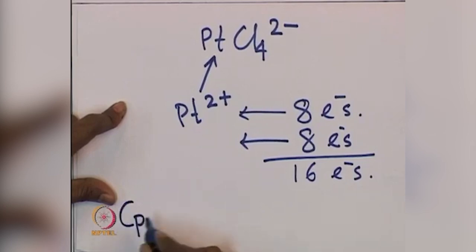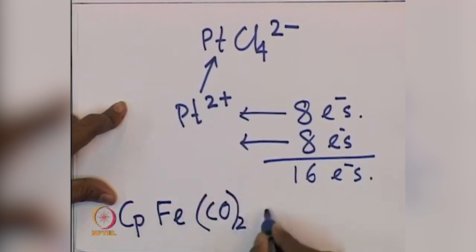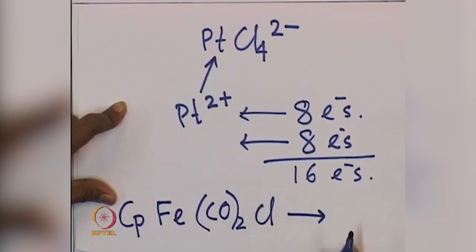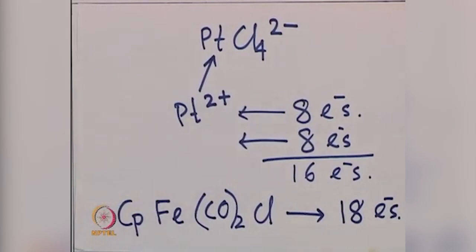Similarly, you can work out the cyclopentadienyl ferrocene dicarbonyl chloride complex on your own — you will find it is an 18 electron complex. I expect you to take some complexes and try to count the electrons. Most often you will get 16 or 18 electron complexes, though it is possible to have electron counts other than 16 or 18, so you just need to count carefully.